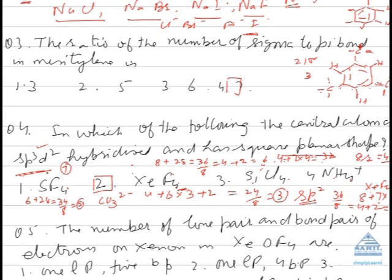So in this way you can calculate the hybridization, the shape, the presence of lone pairs of electrons in all the cases.